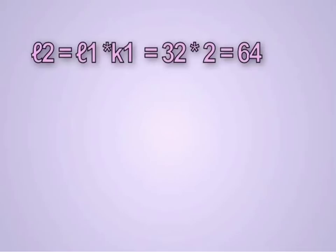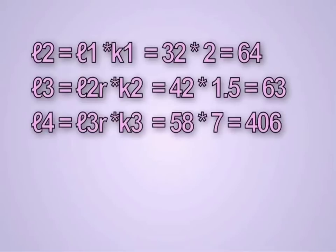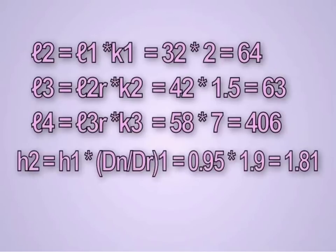Rho 2 equals Rho 1 times K1, which gives 64. Rho 3 equals Rho 2 replacement times K2, which gives 63. Rho 4 equals Rho 3 replacement times K3, which gives 406.